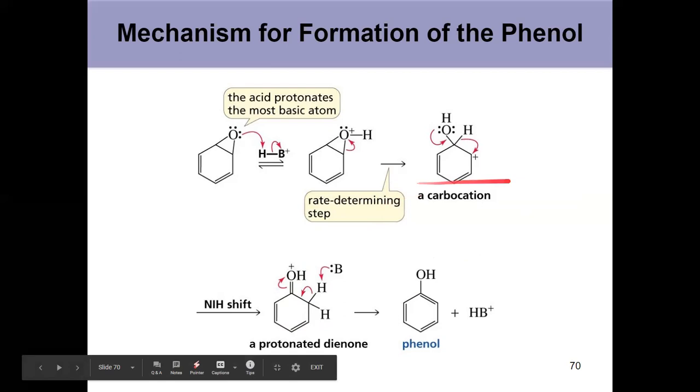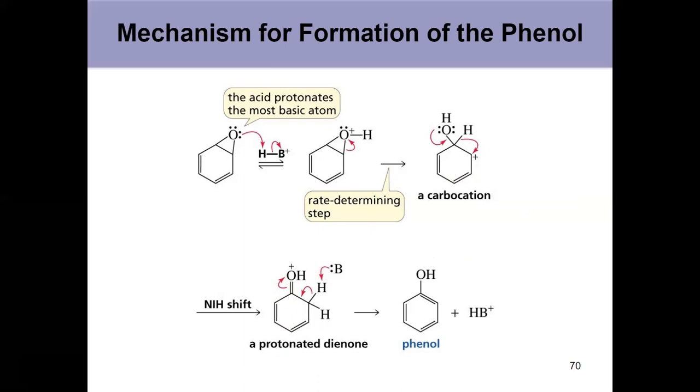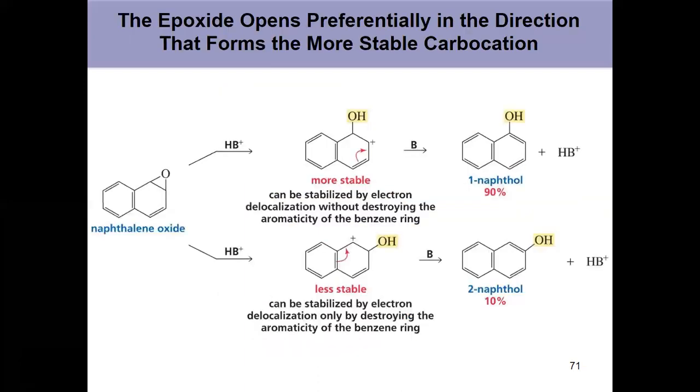The easier it is to form that carbocation, because that's the rate determining step, the faster the reaction will occur. So here we see an even more stable carbocation, faster reaction, the more we see that conversion happening. Know that arene oxides are a special class of reactant. Know they can rearrange to phenols and know how for your homework.